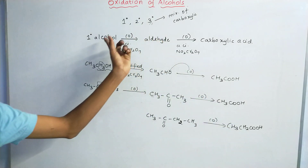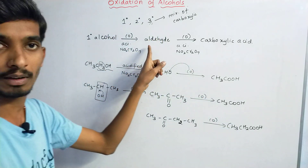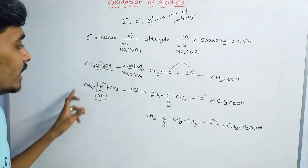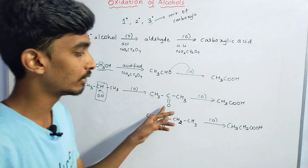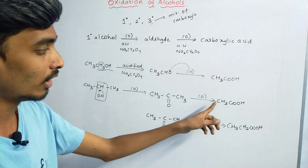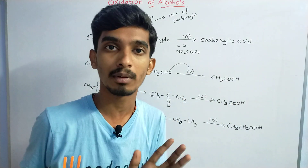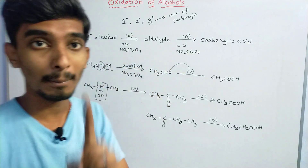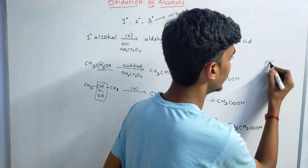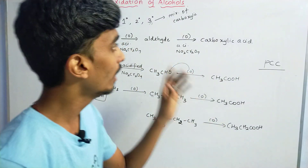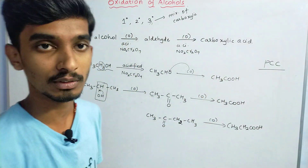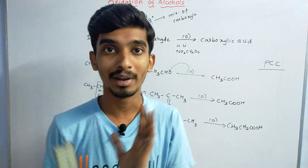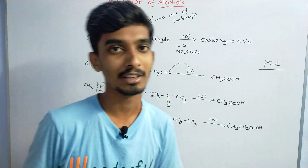In summary: primary alcohol on oxidation gives aldehyde, which further oxidizes to carboxylic acid. Secondary alcohol on oxidation gives ketone, which then oxidizes to carboxylic acid with one fewer carbon. Mild oxidizing agent PCC — pyridinium chlorochromate — stops the reaction at aldehyde or ketone. This concludes the topic of oxidation of alcohols; next is biological oxidation.